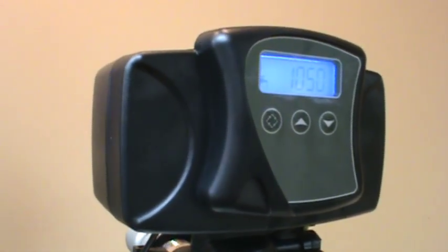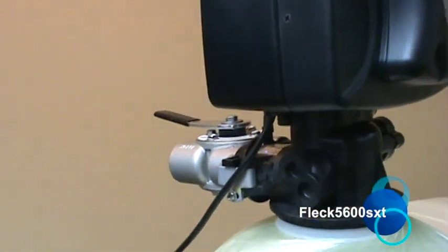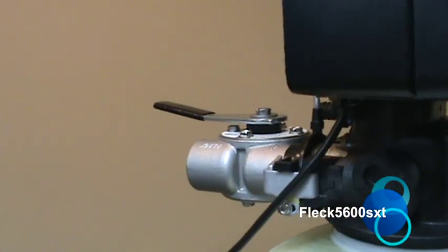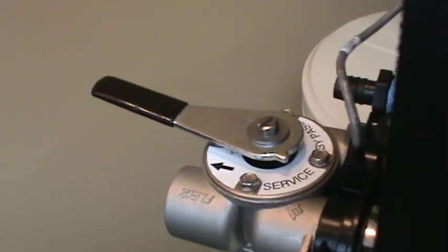So right now this is a Fleck 5600 SXT. We went through that one a little bit in our previous video. It's got the lever style bypass. That's going to be pretty common on most Fleck units. A lot of different Fleck softeners will use that same style.